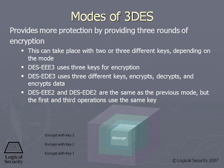Why would you want to encrypt the data, decrypt it, and then encrypt it again? How can that provide any protection? Well, what you're doing is decrypting with a different key. So you encrypt it with key one, you decrypt it with key two, and by doing that it's really just jumbling up the bits even more.